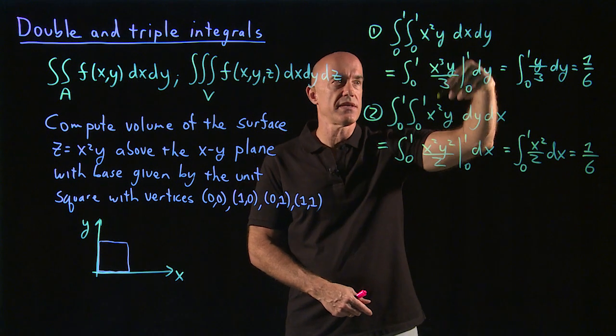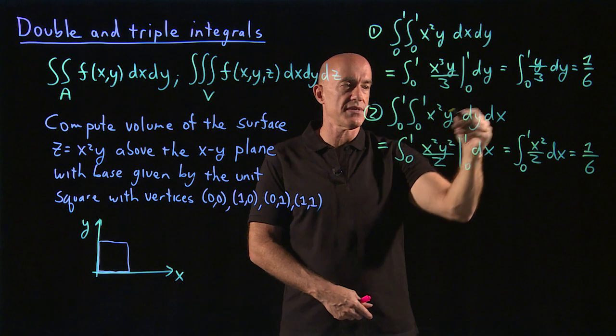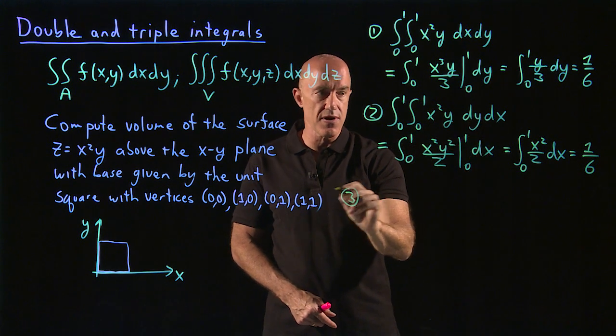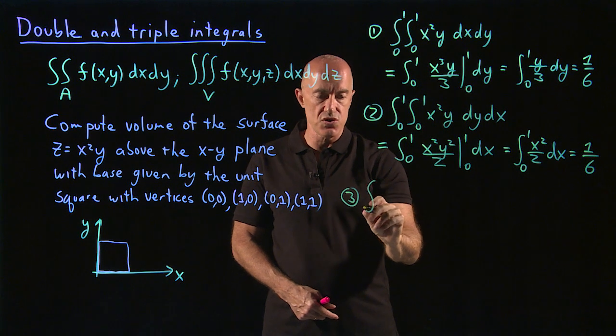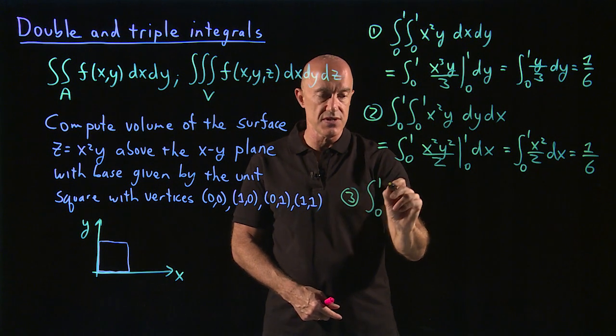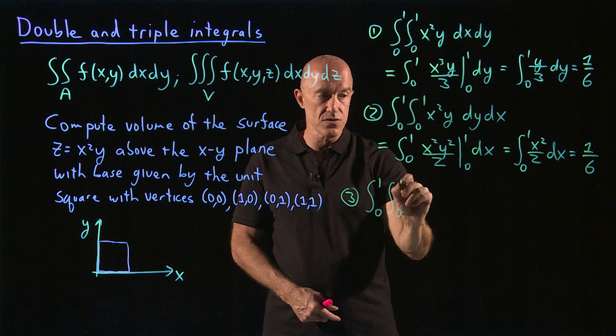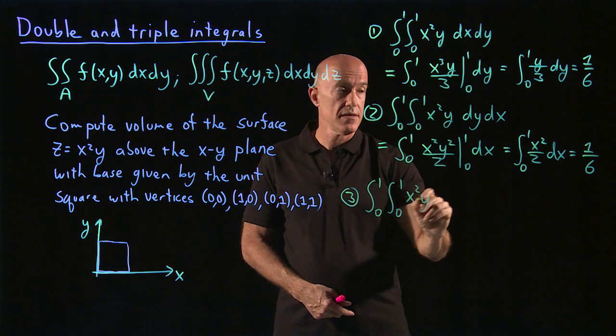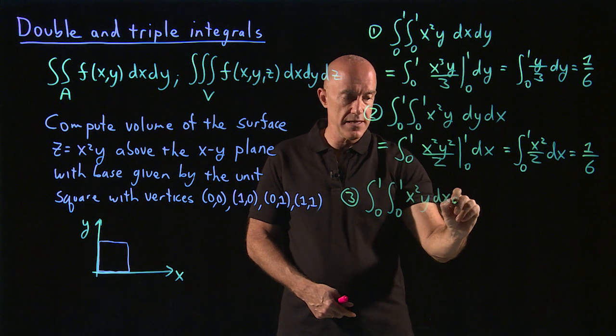So this first one is integrate x first. The second is integrate y. In this particular problem, we can actually shortcut this. We have integral from 0 to 1, 0 to 1, say x squared y dx dy.